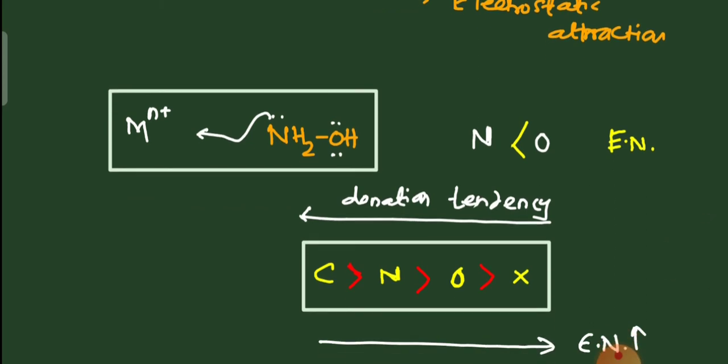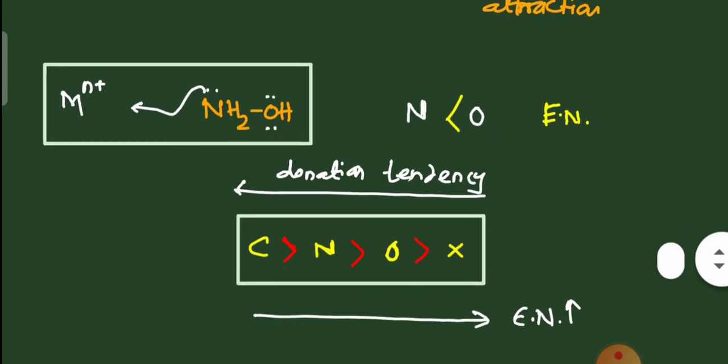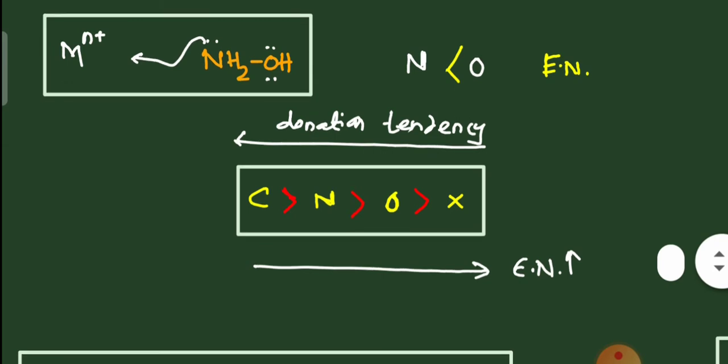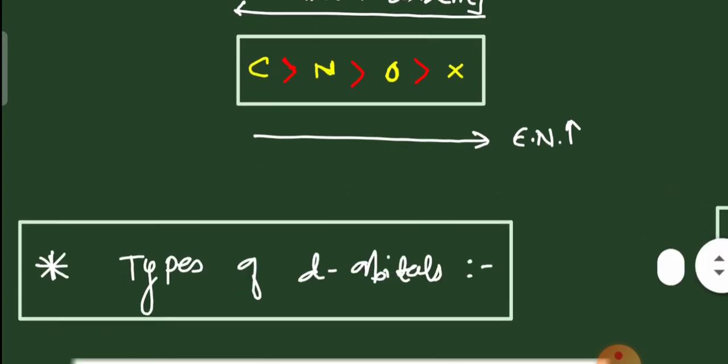For ligands with more than one donor site, such as hydroxylamine (NH₂OH), which is a bidentate ligand with nitrogen and oxygen donor atoms, only nitrogen donates the electron pair because nitrogen has lower electronegativity than oxygen. According to the spectrochemical series — carbon, nitrogen, oxygen, and halogen donor ligands — carbon donor ligands are more easily available for donation than nitrogen, then oxygen, then halogen, because donation power increases with decreasing electronegativity.